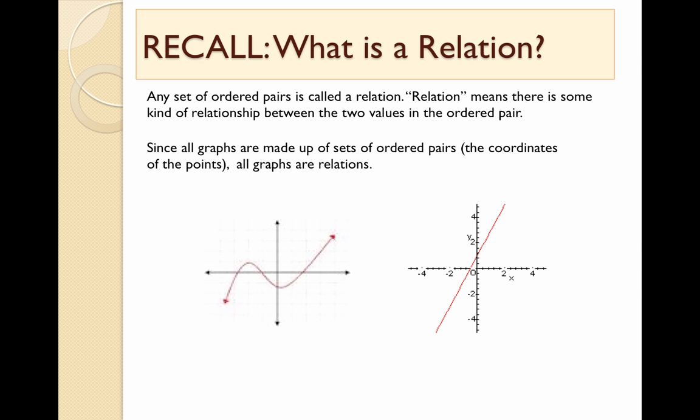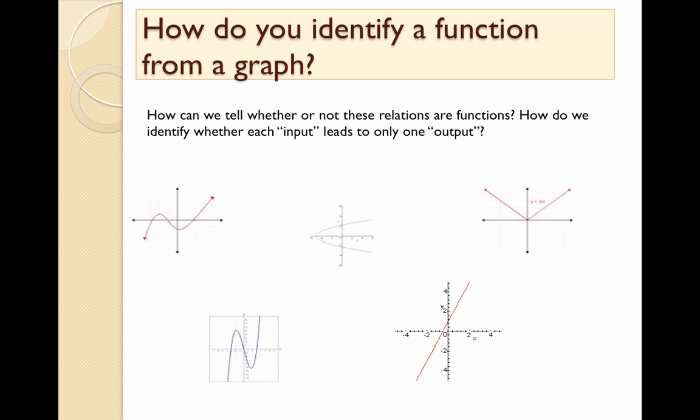So let's recall first of all what is a relation. Remember, a relation is any set of ordered pairs. Since graphs are just made up of a number of points which are ordered pairs, then all graphs are relations. But now how can we tell whether a particular graph is a function? Because not all relations are functions.